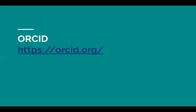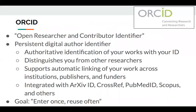Our next system is ORCID — the Open Researcher and Contributor Identifier. It is a persistent digital author identifier: a number assigned to you that provides authoritative identification of your works with you as a researcher. It can help distinguish you from other researchers and support automatic linking of your works across institutions, publishers, and funders. It's integrated with a lot of research systems including arXiv, Crossref, PubMed, Scopus, and others. Their goal is that you can enter data once and reuse it often.